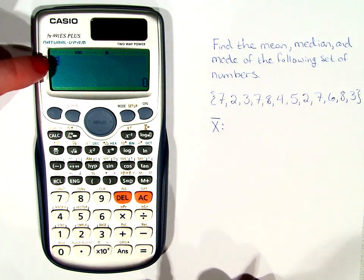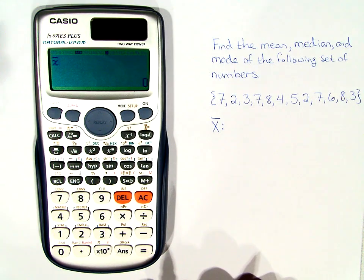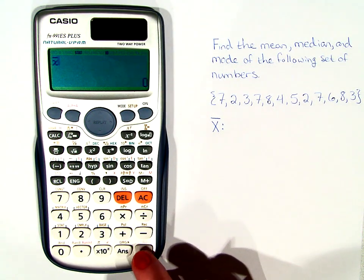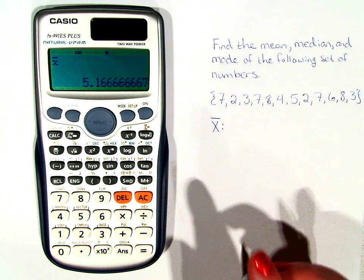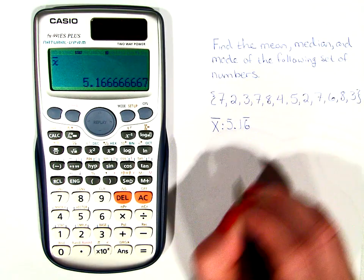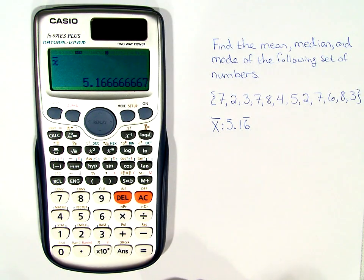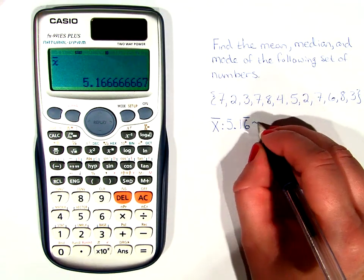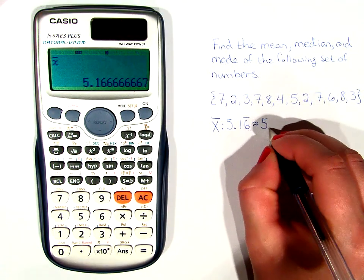And it's saying, is this what you want? You want the mean? Yes, and we tell it that by hitting equals. And we get that the mean is 5.1 and 6 repeated. If we were to round this to two decimal points, it would be 5.17.